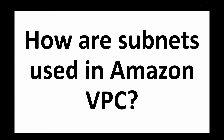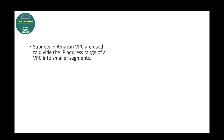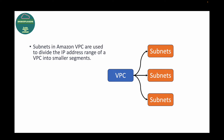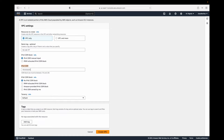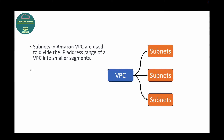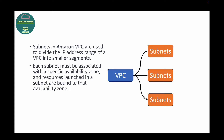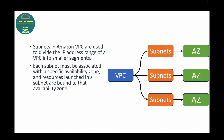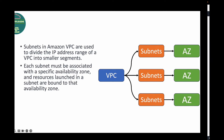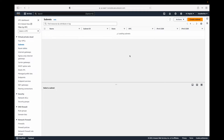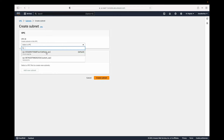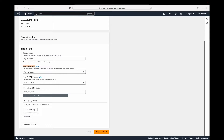The next question is: how are subnets used in Amazon VPC? Subnets are a component of your VPC used whenever you want to divide your IP address range into smaller segments. These subnets are subnetworks inside the VPC — an isolated section that we are creating. Each subnet must be created in a specific availability zone, and resources launched in a subnet are bound to that availability zone. So subnets are availability zone specific.